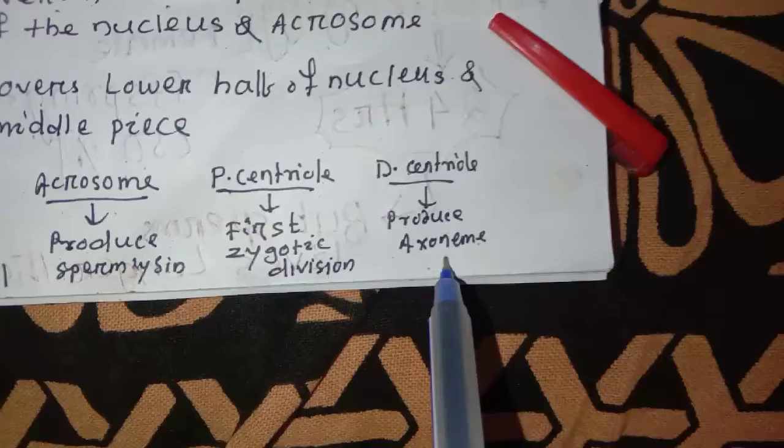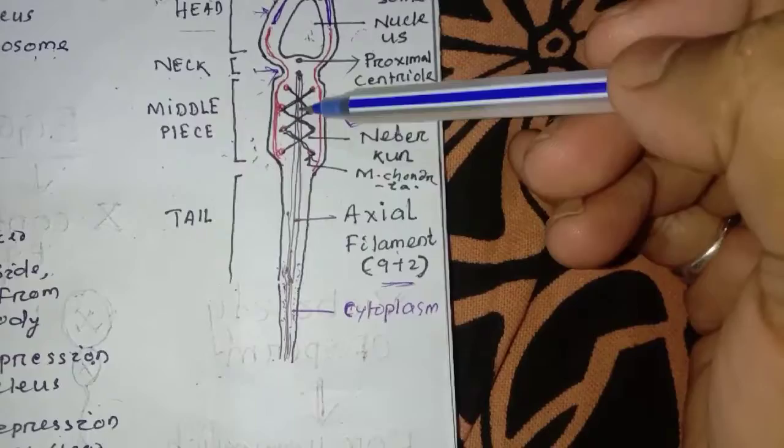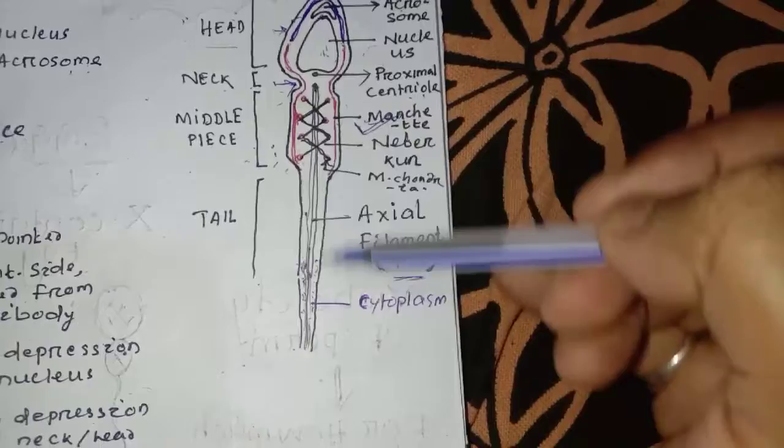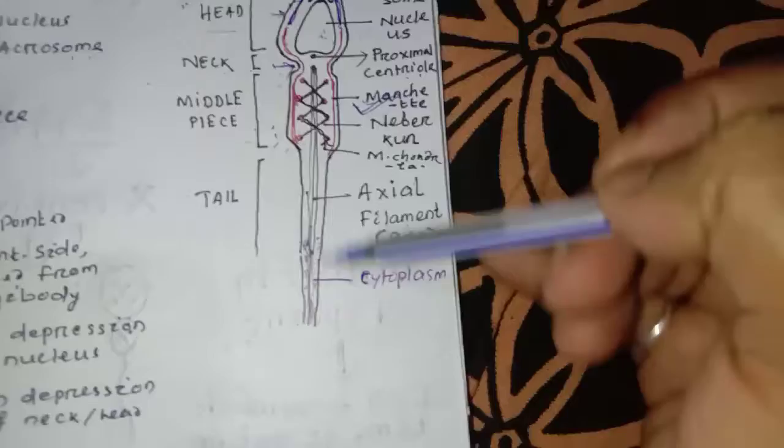The axial filament forms a skeletal structure — it is the main structural element of the tail. The axial filament is a fibre-like structure and forms the total structural framework of the sperm tail.